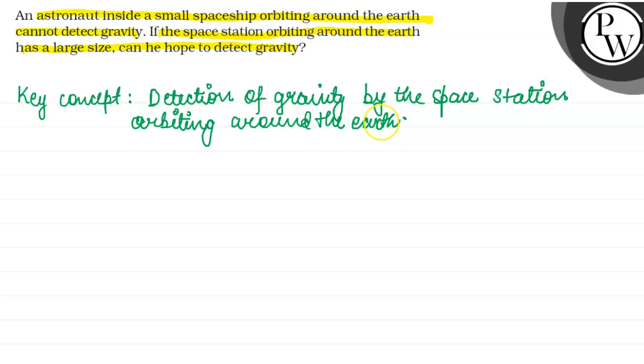So we know inside a small spaceship orbiting around the earth, the value of acceleration due to gravity is constant. That's why the astronaut feels weightlessness.